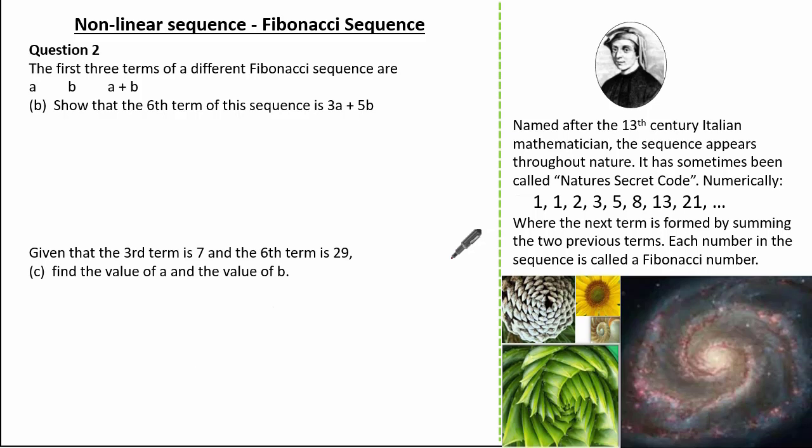So now let's have a look at another exam question. Here the question says the first terms of a different Fibonacci sequence are a, b, and a plus b. We are asked to show that the 6th term of the sequence is 3a plus 5b. So let's start by labeling each term first. We know the first term is a and we know the second term is b. So to work out the third term, it confirms that the third term is a plus b.